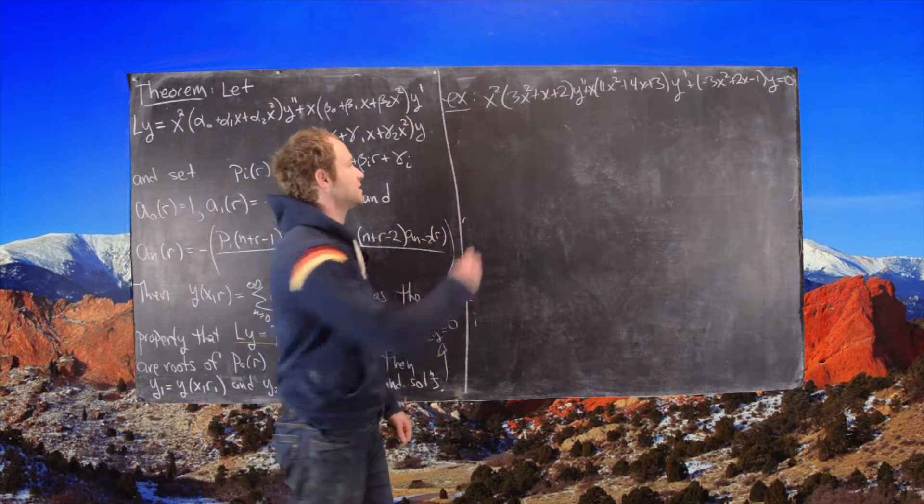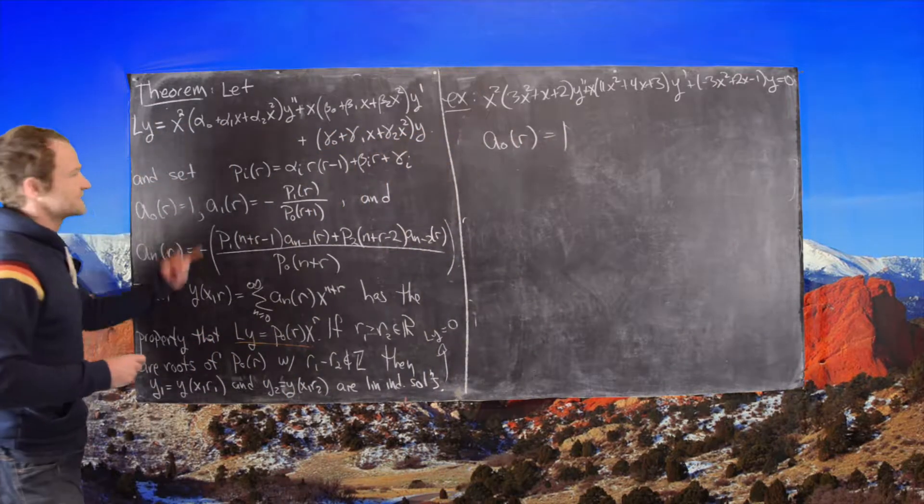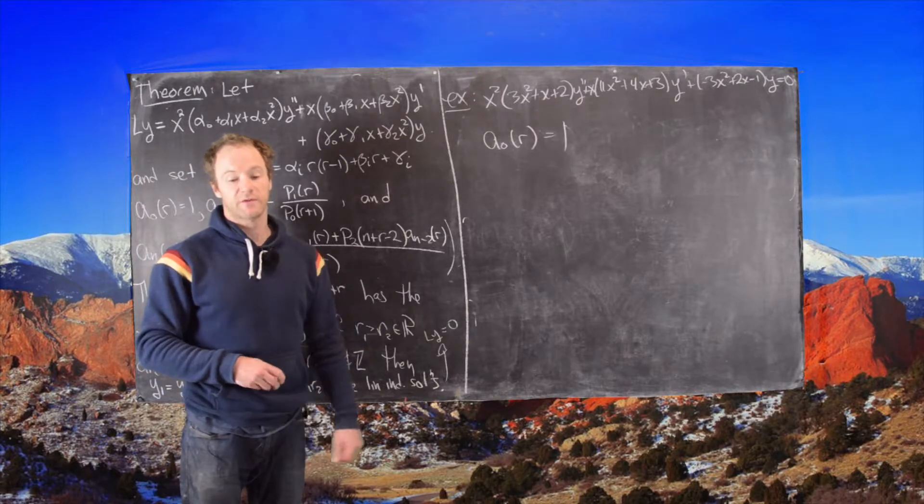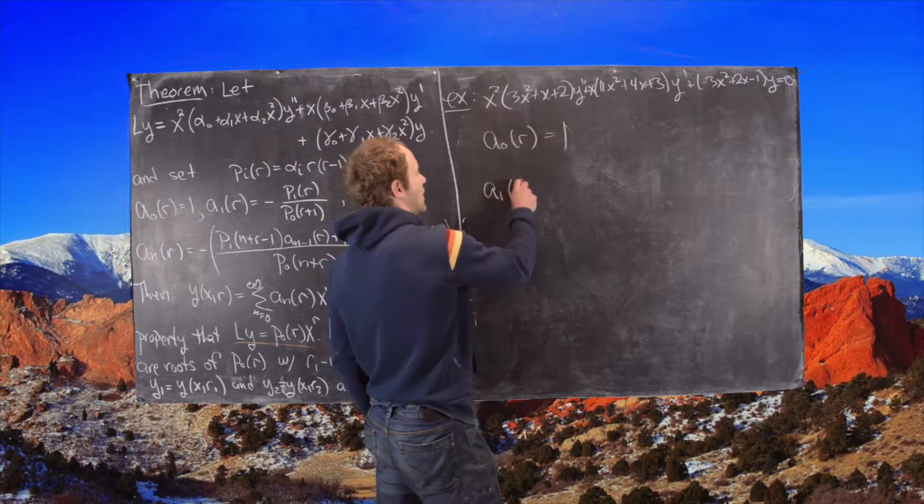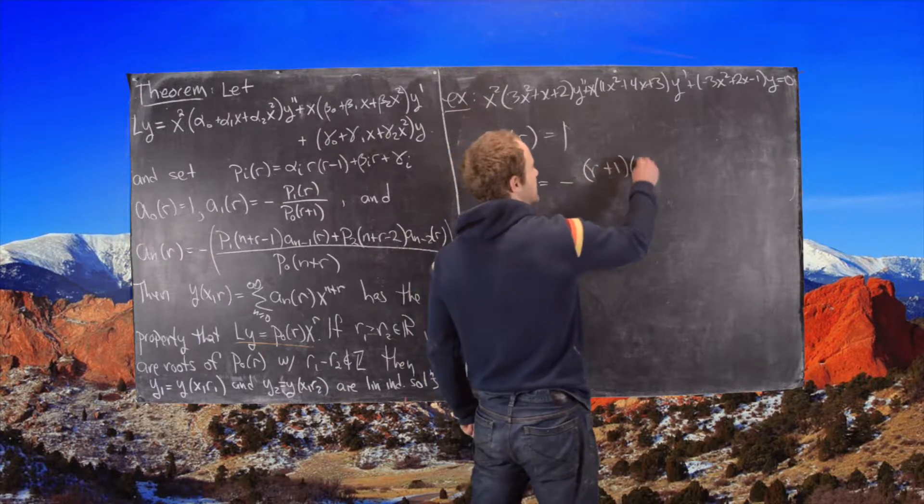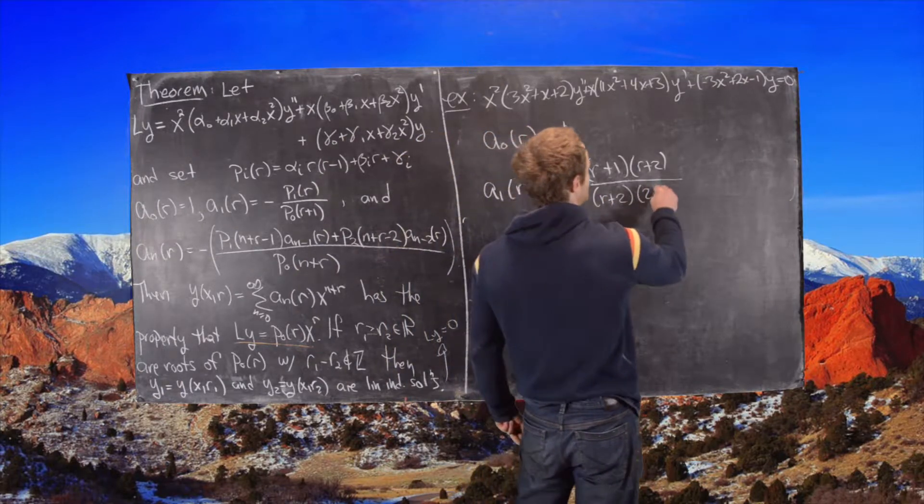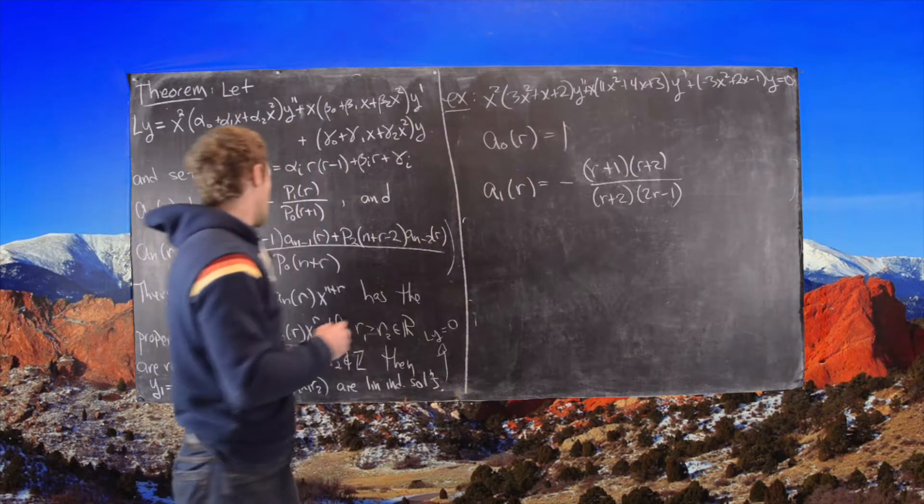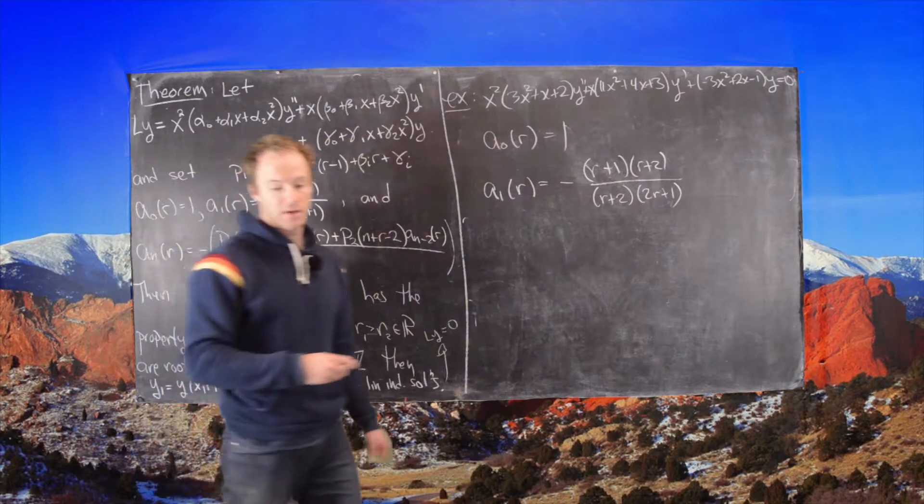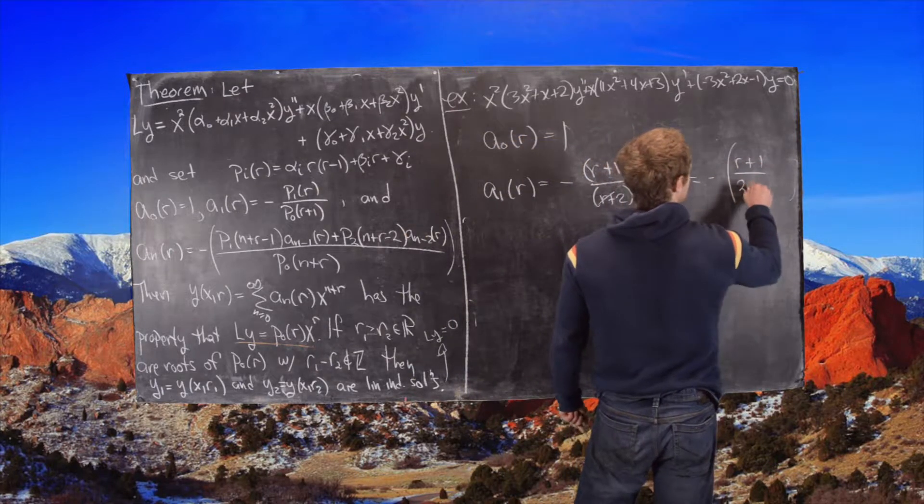So previously we just calculated these polynomials and notice we can always set a_0 of r equal to 1. That's built off of this series and it's because we have a homogeneous differential equation here so we can always set that coefficient equal to 1. It would be a free variable usually. And then we have a_1 of r is equal to the following. So this is going to be equal to, in our case, minus (r plus 1)(r plus 2) all over (r plus 2)(2r plus 1). But notice this thing cancels a little bit and we get minus (r plus 1) over (2r plus 1).